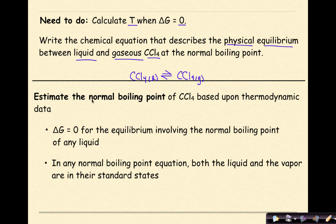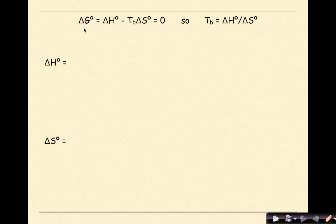We're going to estimate the normal boiling point of CCl4 based upon thermodynamic data. Now, delta G is equal to zero for the equilibrium involving the normal boiling point of any liquid. In any normal boiling point equation, both the liquid and the vapor are in their standard states. So the formula that we're going to use here is delta G prime is equal to delta H prime minus T sub B, and remember that little B right here just means boiling, the boiling point, delta S prime is equal to zero. We can rearrange this to find the temperature of the boiling point by looking at thermodynamic data for delta H and delta S prime.